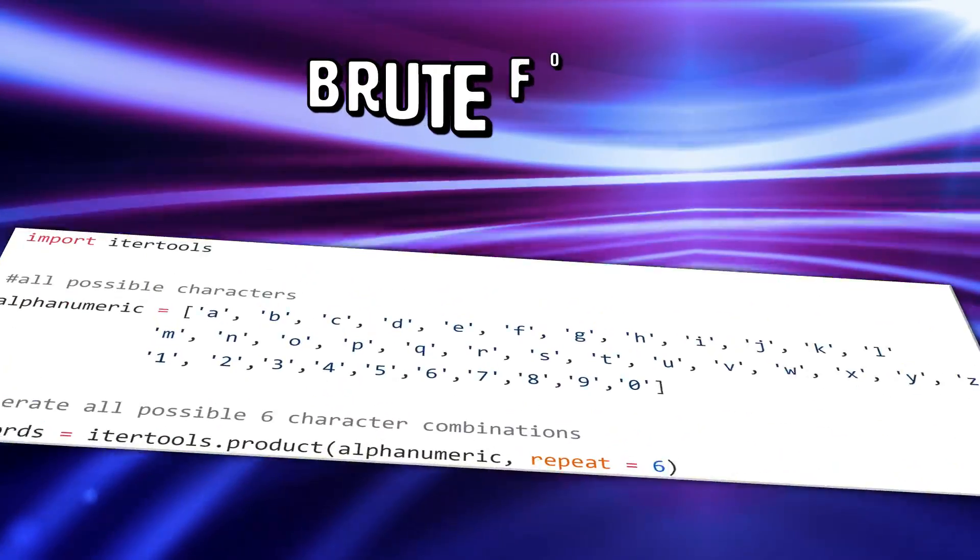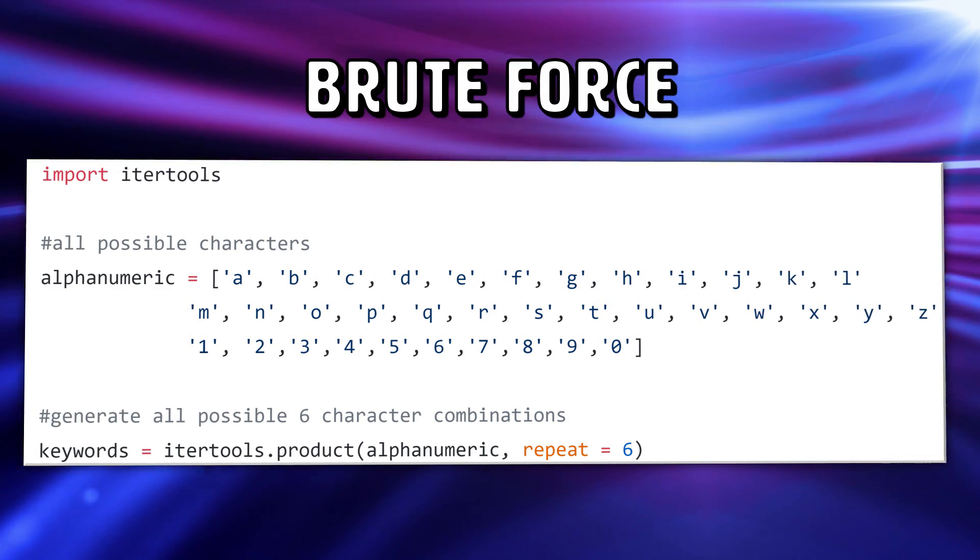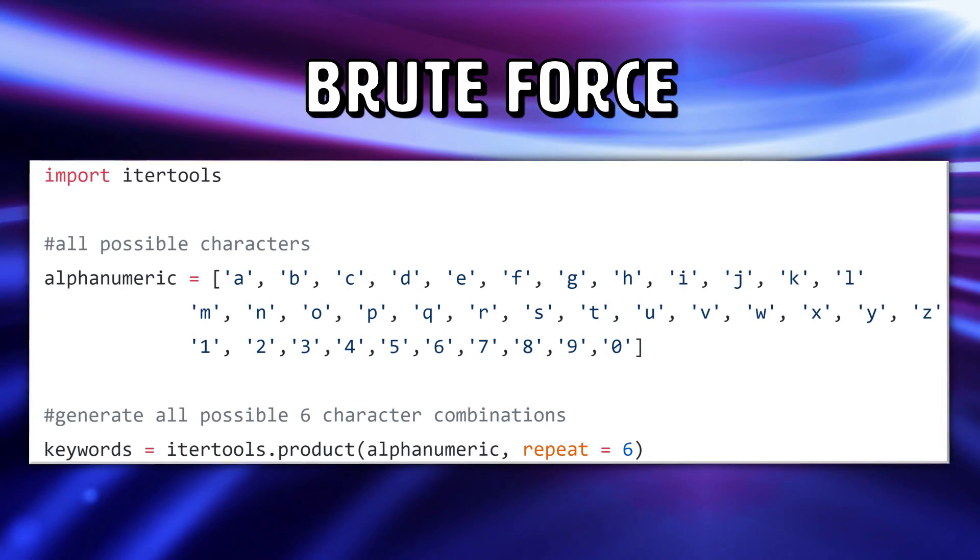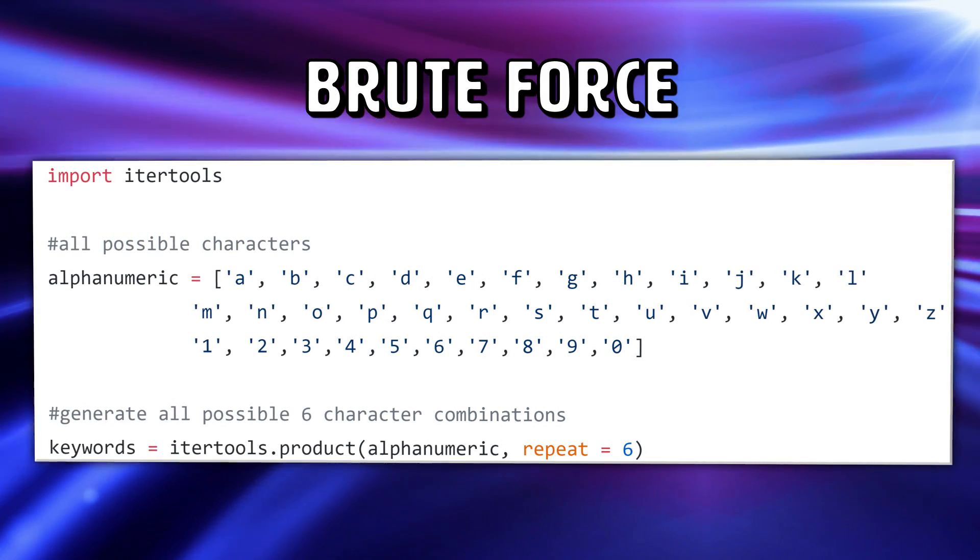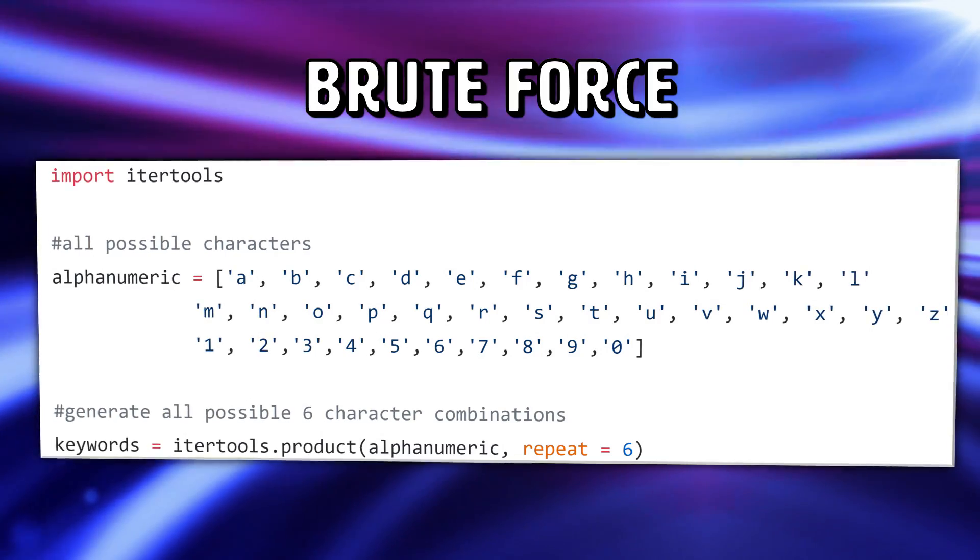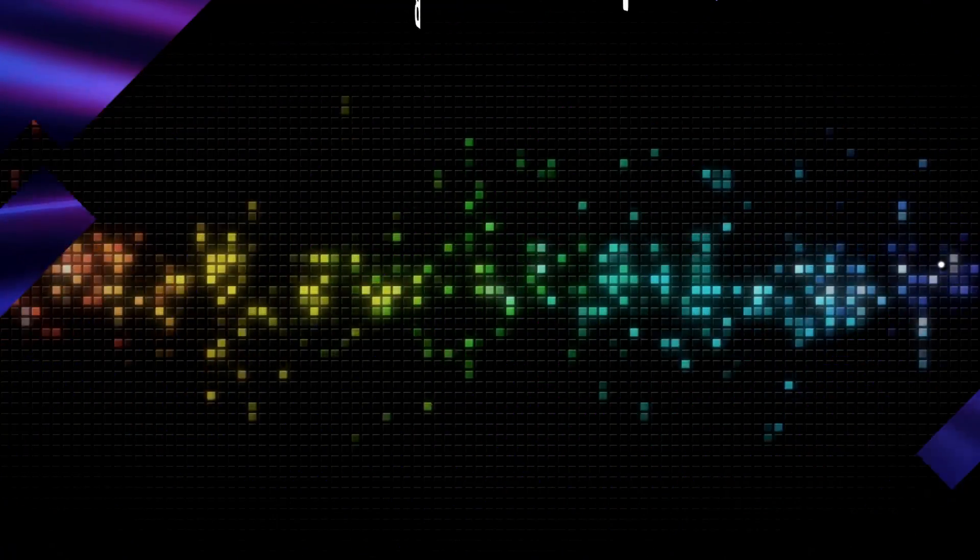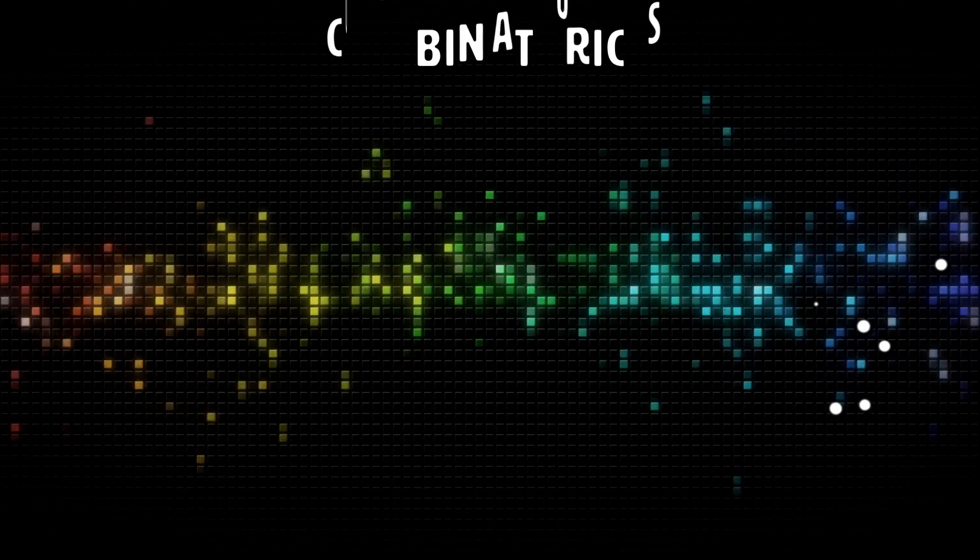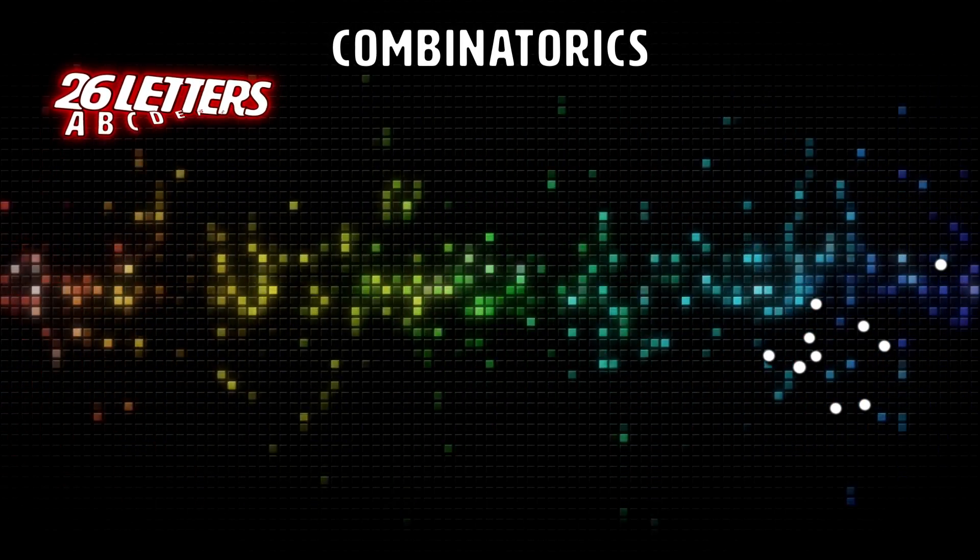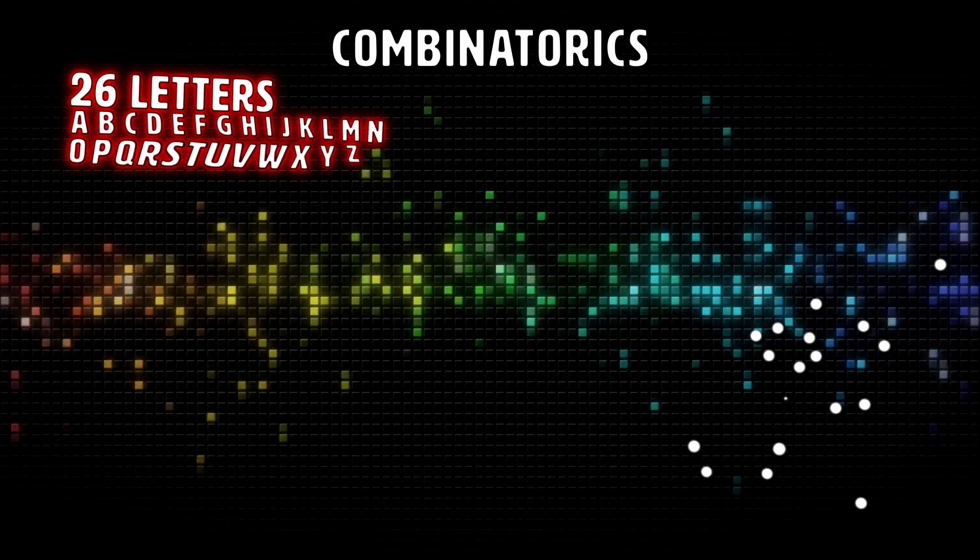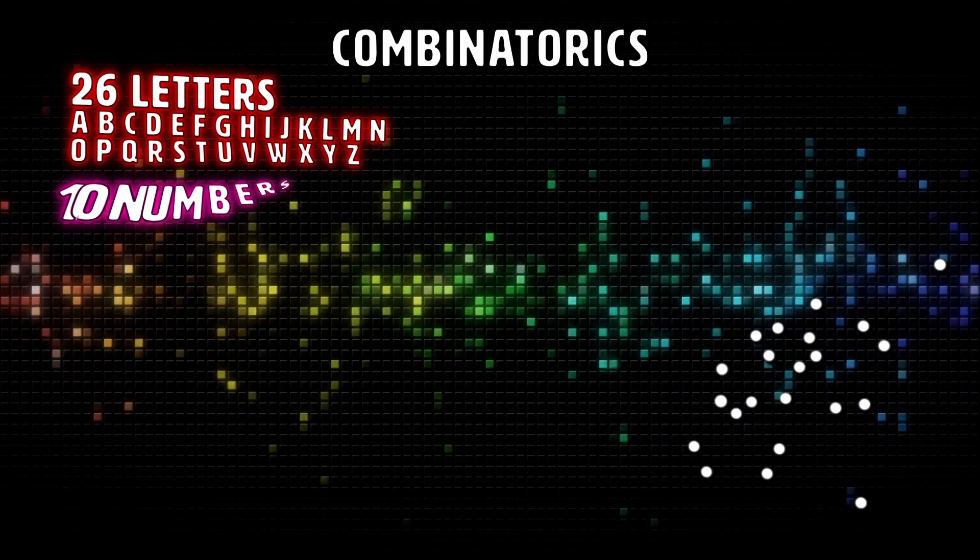Our first strategy here will be to see if we can write a script that will brute force all possible combinations of every character A through Z and 1 through 9. But when we start running the script, it starts taking quite a while. In the meantime, let's try and calculate how many combinations are possible here. Since there are 26 letters and 10 digits, we have a total of 36 characters to choose from for each position.